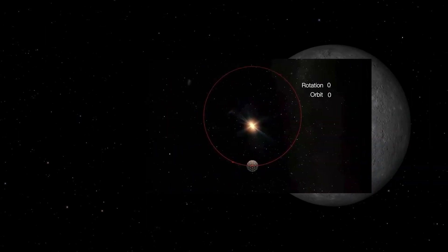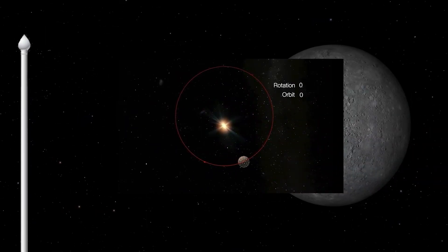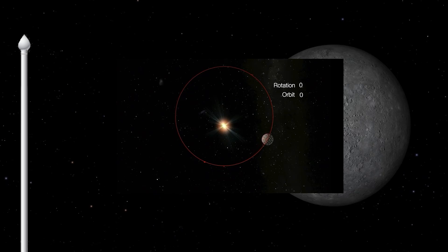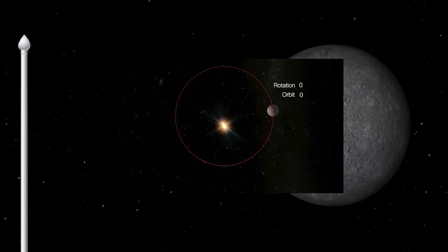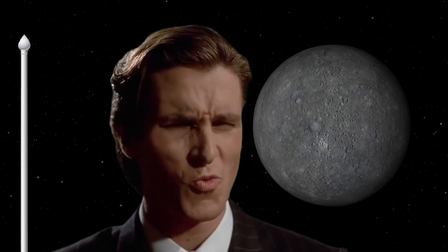The next planet will be Mercury. It has a unique orbital resonance with the Sun. That is, for every two revolutions around the Sun, it makes three revolutions on its axis. This phenomenon creates a peculiar picture when observing the planet's motion from Earth.